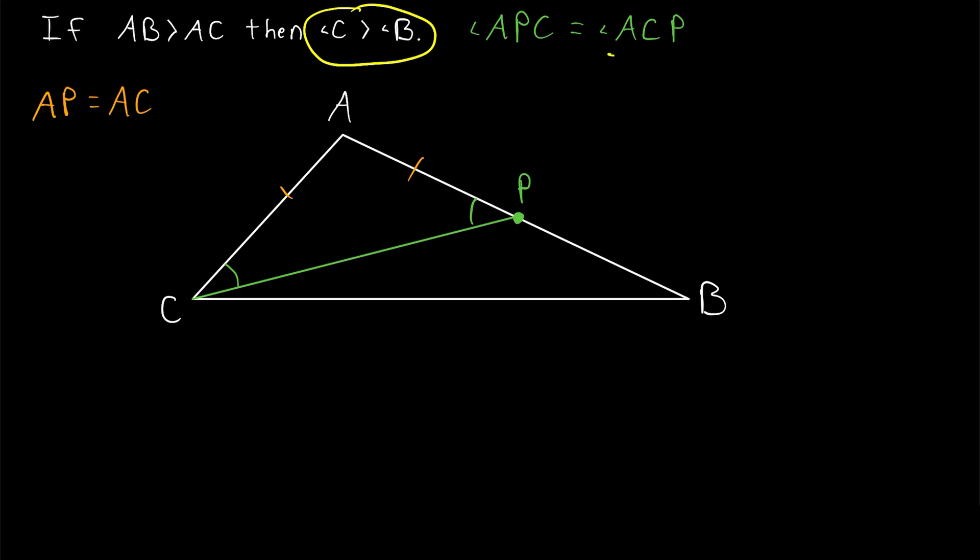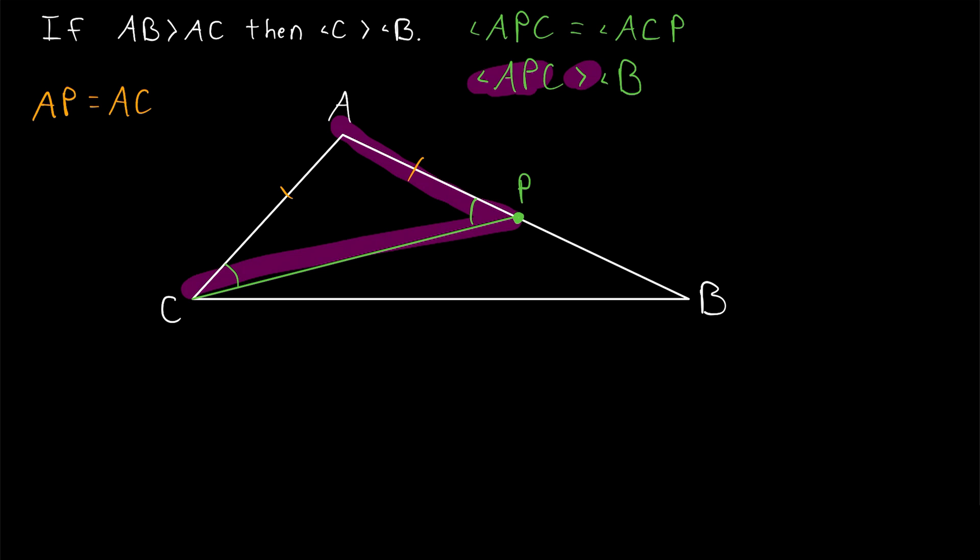So we can relate angle C to this angle ACP. But of course, we've related angle ACP to this angle as well, APC. Then is there any way that we can relate angle APC to angle B to tie this all together? Yes, indeed. The exterior angle theorem tells us that the measure of angle APC is certainly greater than the measure of angle B.